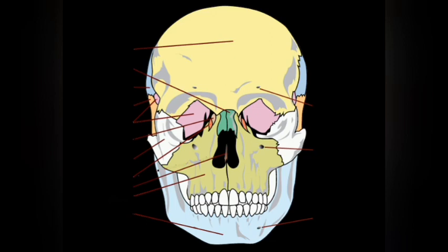So we are able to list out the viscerocranium. The viscerocranium consists of: two zygomatic bones, two lacrimal bones, one nasal bone, two inferior nasal conchae, one vomer bone, two palatine bones, two maxilla bones, and one mandible. So these are the bones that make up the viscerocranium.